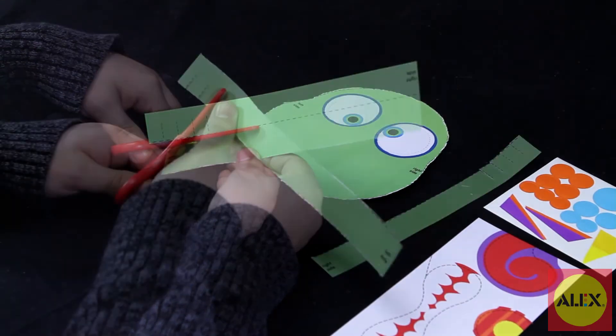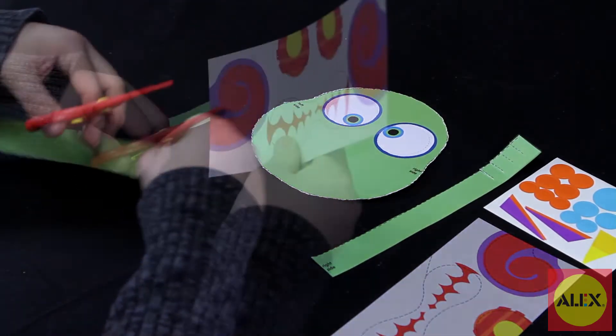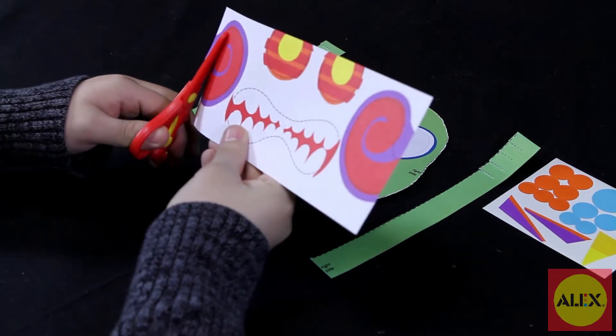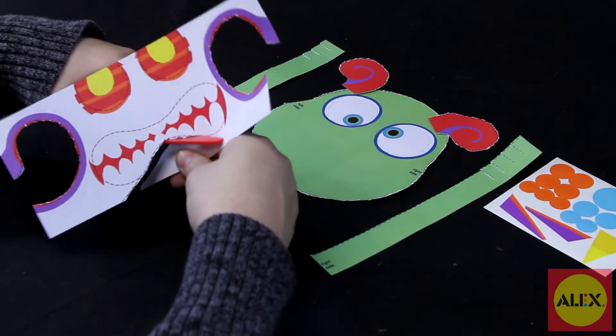Ready, Set, Cut is part of the Alex Toys Little Hands collection specifically designed for preschoolers to learn and develop skills in a fun way with no reading required.